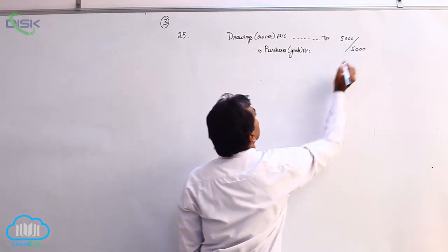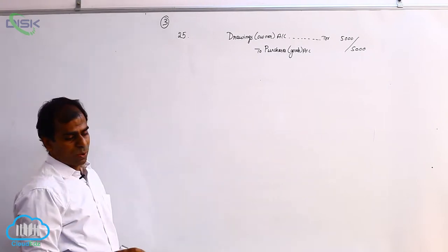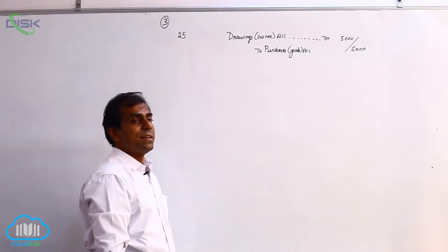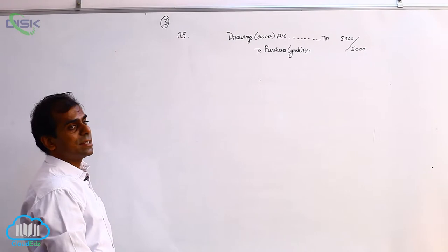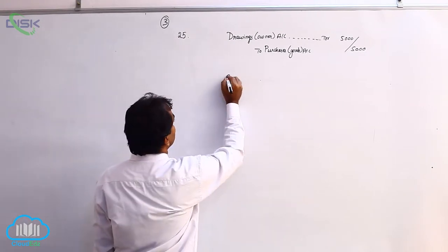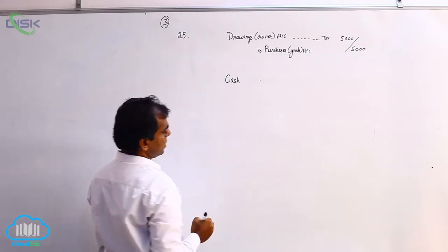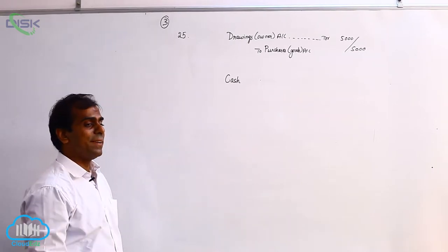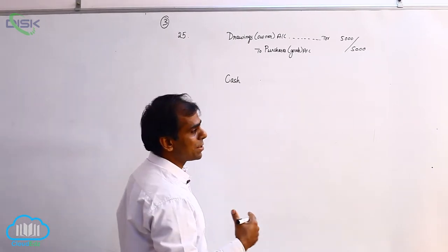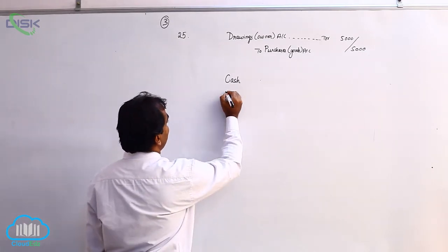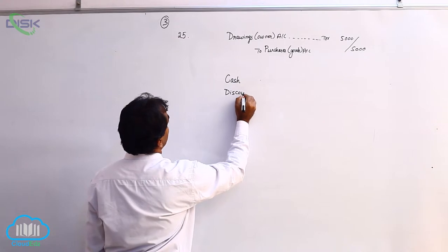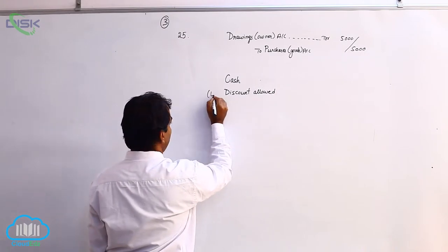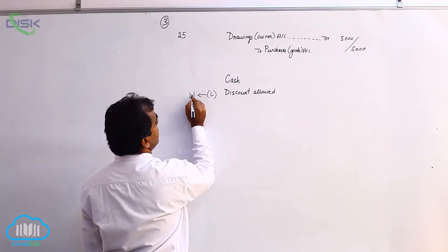The narration could be: being goods withdrawn by the owner. The next transaction is on 27th, which says cash received from Anand 4000 and discount allowed 50. We have received cash, so one account is cash, and there is discount allowed. Discount allowed means we are giving a concession to the person who is paying the cash. When we are giving concession to someone, it is a loss, so we take discount allowed as a loss. When there is a loss, it becomes a nominal account.